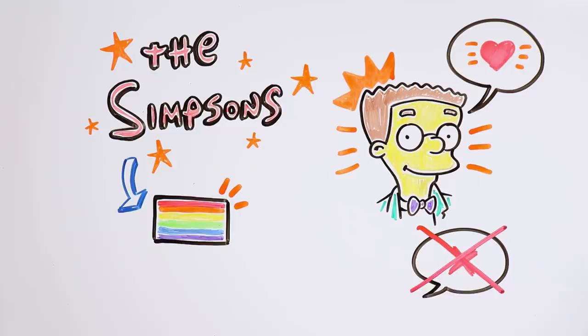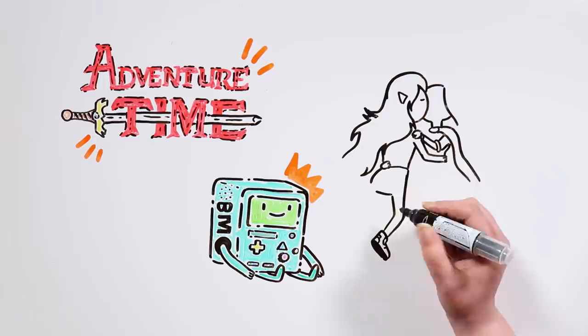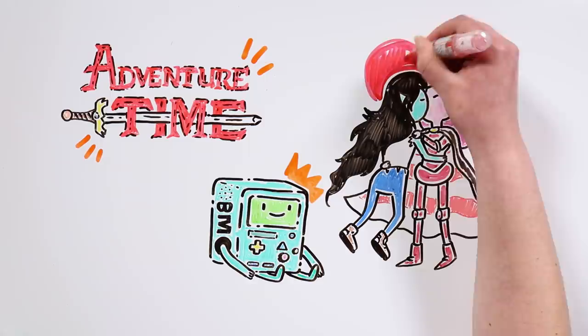Adventure Time also decided to represent LGBTQ plus people with some of its characters. BMO is considered by many to be gender fluid, and the lesbian relationship between Marceline and Princess Bubblegum was shown explicitly in the final episodes.